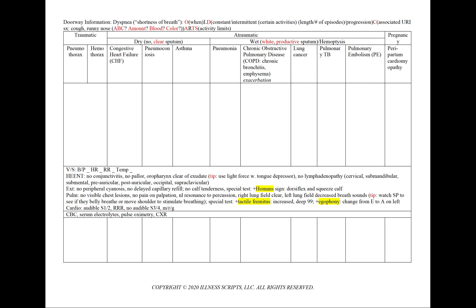Does the shortness of breath appear to be occurring more frequently? To help characterize the shortness of breath, since this is a poem case, we can ask about any other associated URI symptoms, such as a cough or runny nose. For both, we'll use our mnemonic A, B, and C to write down for our note the amount, blood, and color of any bodily fluid, aggravating and alleviating factors, treatments tried, and any limits on activities.